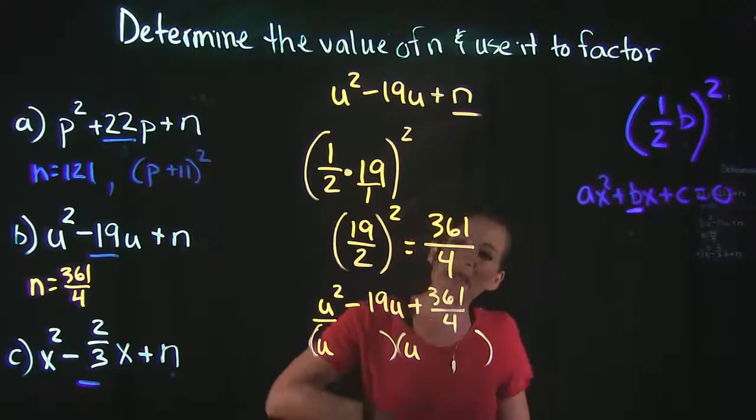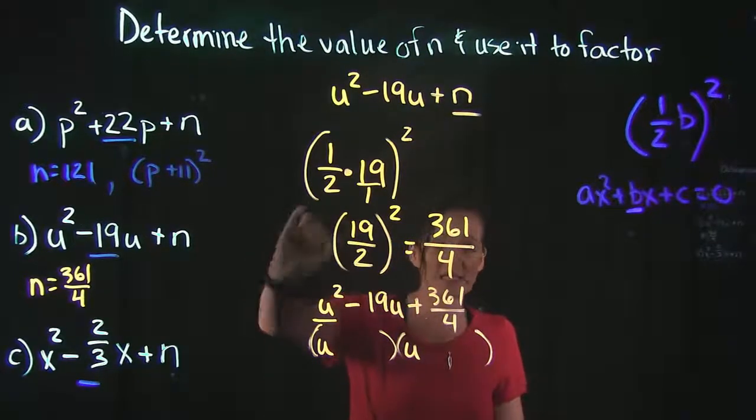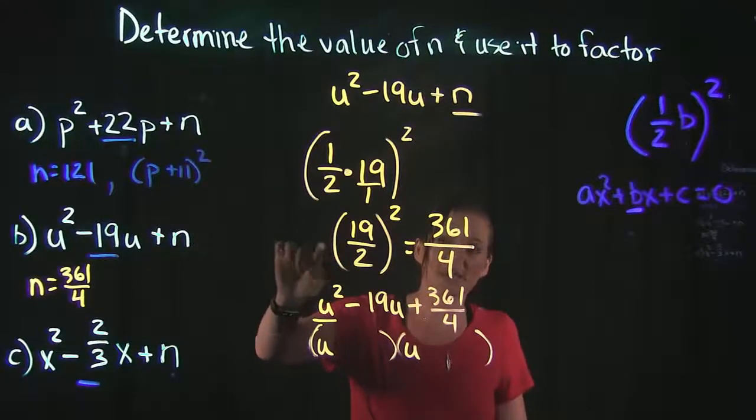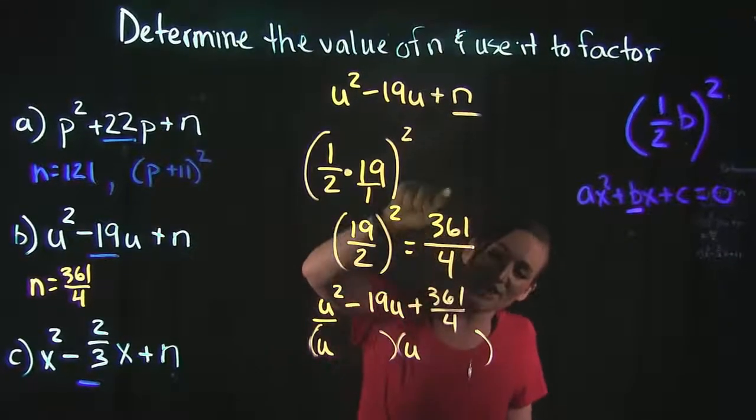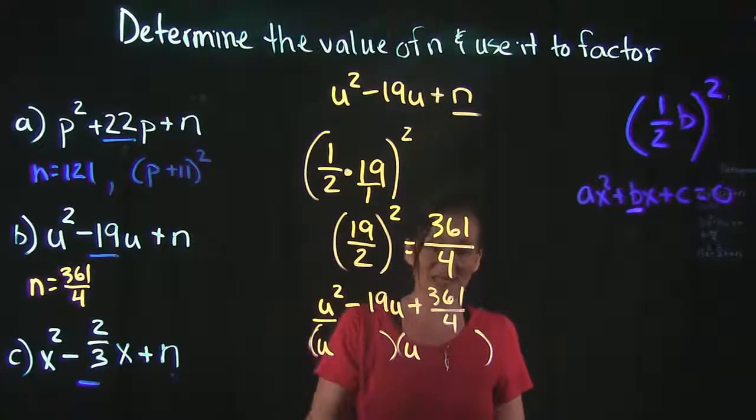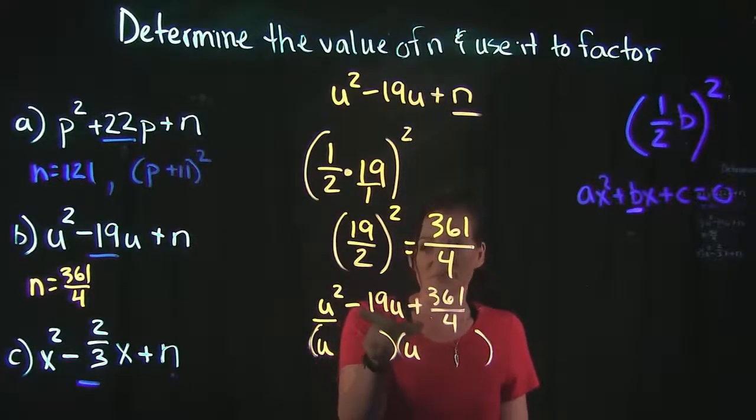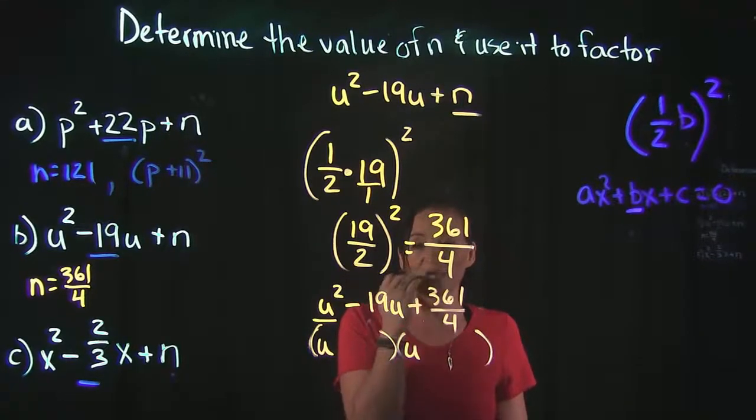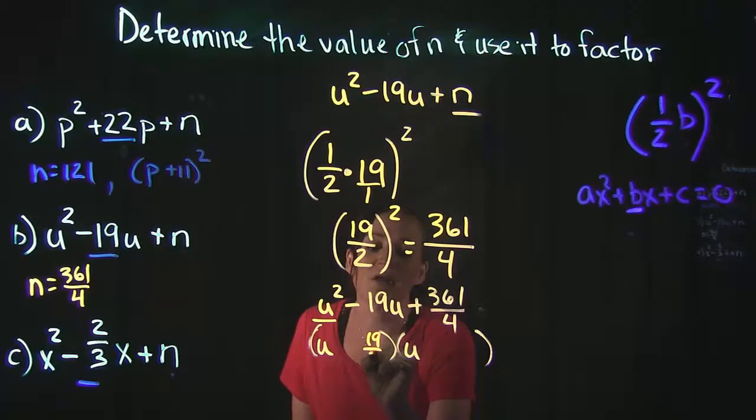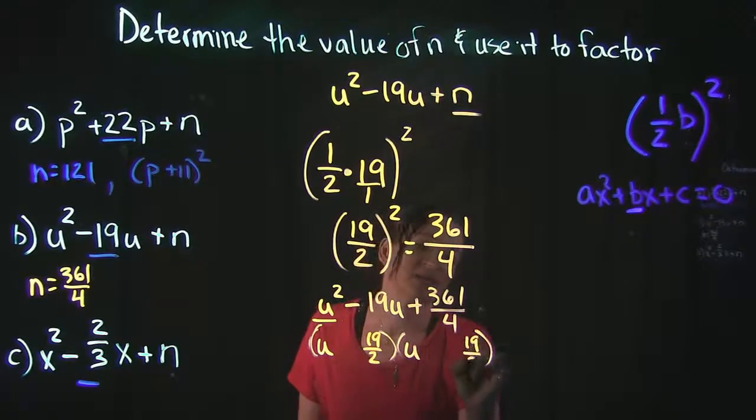But again, backtracking and realizing we just did 19 over 2 times 19 over 2 to get 361 over 4, and if you add 19 over 2 plus 19 over 2, you do get this 19u here. So that is going to be our last term here: 19 over 2.